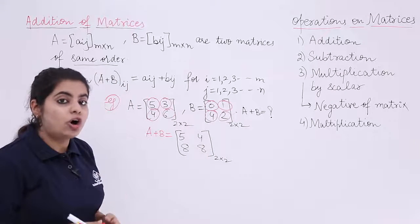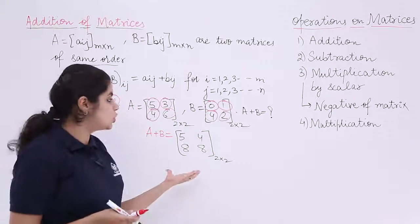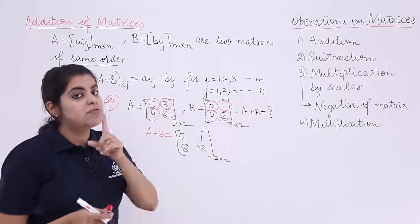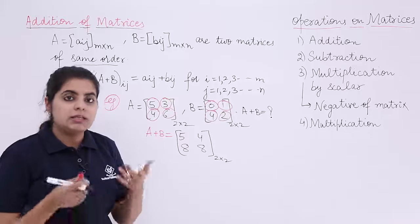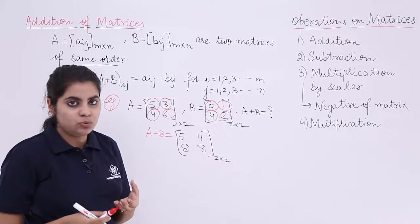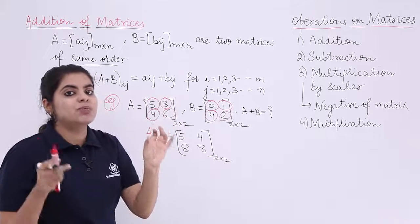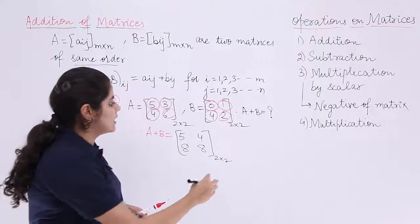So that means in order to find out the addition of two or more matrices, one condition is for sure that the order should be same. The other thing you have to always take into account is the respective position elements and then only add them. Let's take another example.